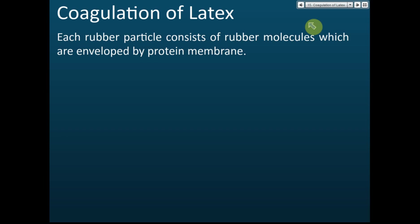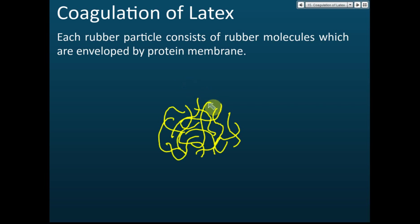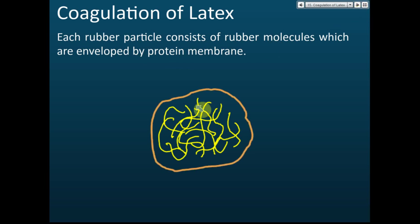To understand the coagulation of latex, we need to know what happens. Each rubber particle consists of rubber molecules enveloped by a protein membrane. The rubber molecule is a polymer — a very long chain molecule. Thousands of rubber molecules can be kept inside this envelope, covered by one layer of protein membrane.